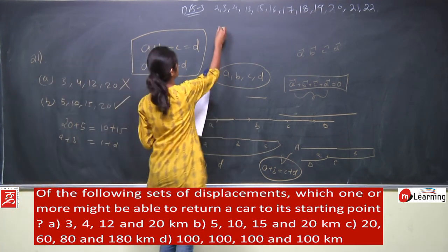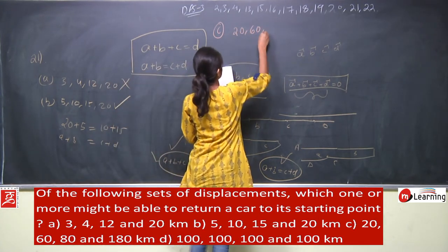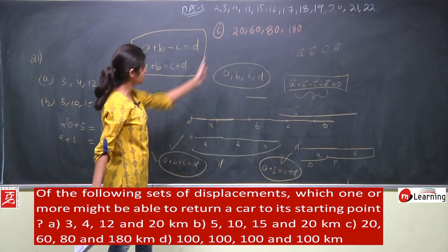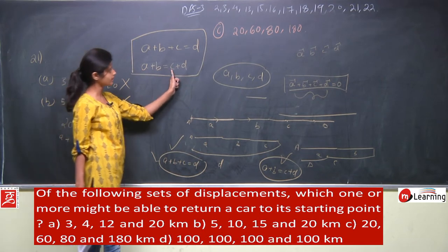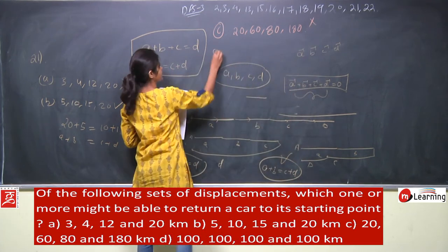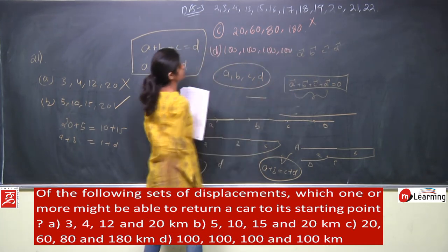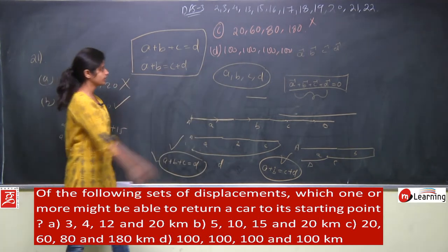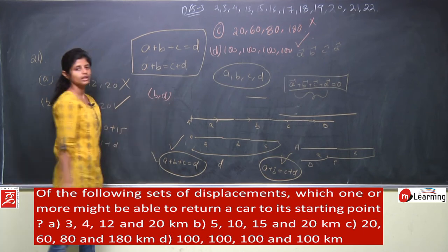Case C: values 20, 60, 80, 180. The sum of any three is 160, not 180, and no two-pair split works. So case C is eliminated — displacement can never be zero here. Case D: values 100, 100, 100, 100. Here 100 + 100 = 100 + 100 = 200, which satisfies the condition. So displacement can be zero. The answer is B and D.